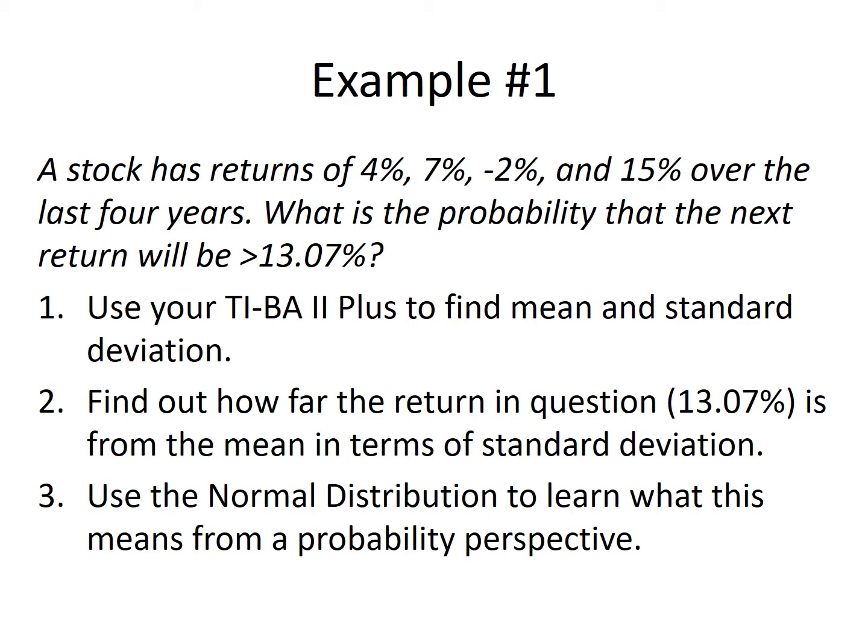Let's take a look at our first example. A stock has returns of 4%, 7%, negative 2%, and 15% over the last four years. What is the probability that the next return will be greater than 13.07%?